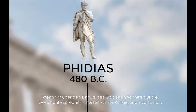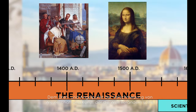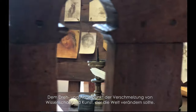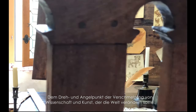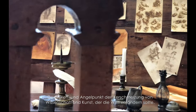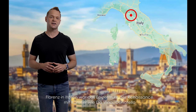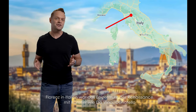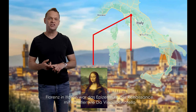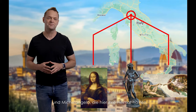To talk about the golden ratio in history, we have to fast forward to the Renaissance — a pivotal point where science and art intermingled and quite literally changed the world. Florence, Italy was the epicenter of the Renaissance, with artists like da Vinci, Donatello, and Michelangelo calling it home.